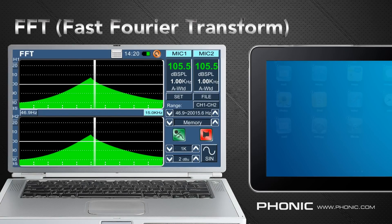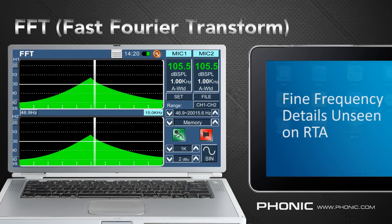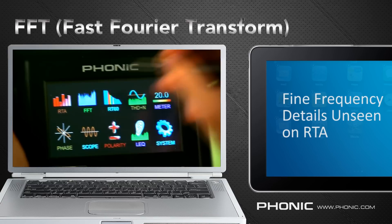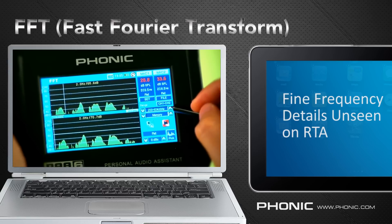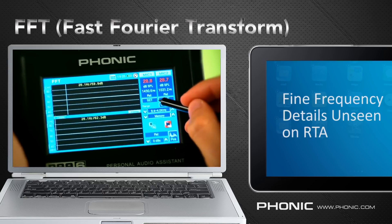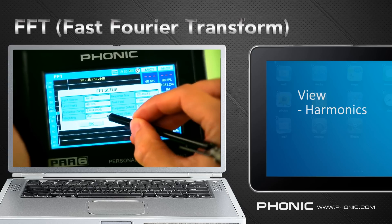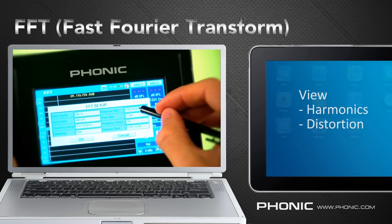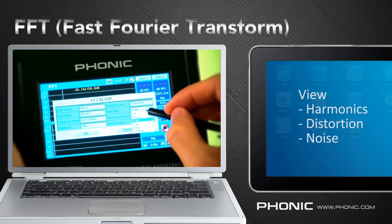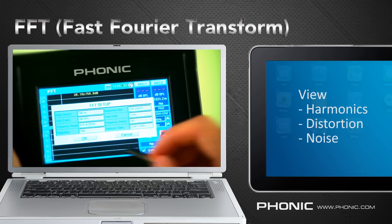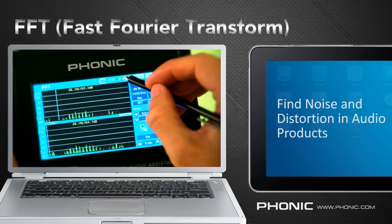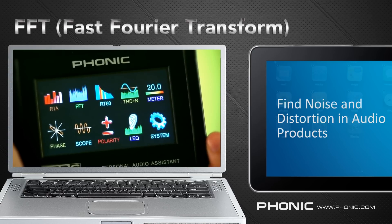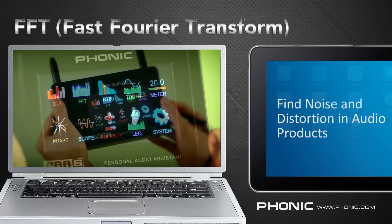The next function is the FFT, or Fast Fourier Transform. We don't actually need to understand the mathematics behind an FFT to use it — we just need to know the application. An FFT will give very fine detail of frequencies otherwise invisible on RTAs, allowing us to see harmonics or distortion otherwise unseen. So if a signal processor or other device is emitting noise, we can use the FFT to find out at exactly which frequency the noise is located and better deal with it.